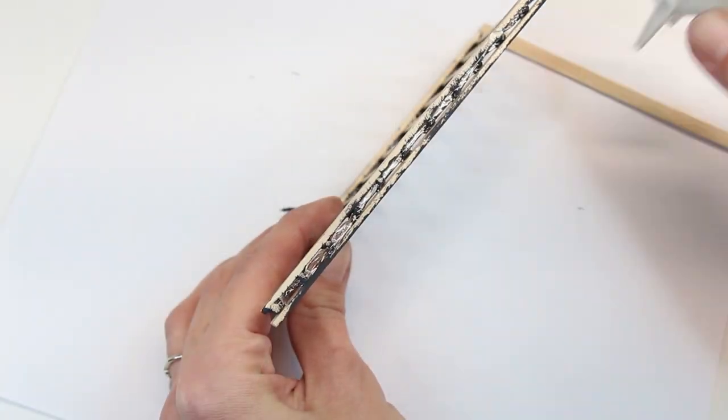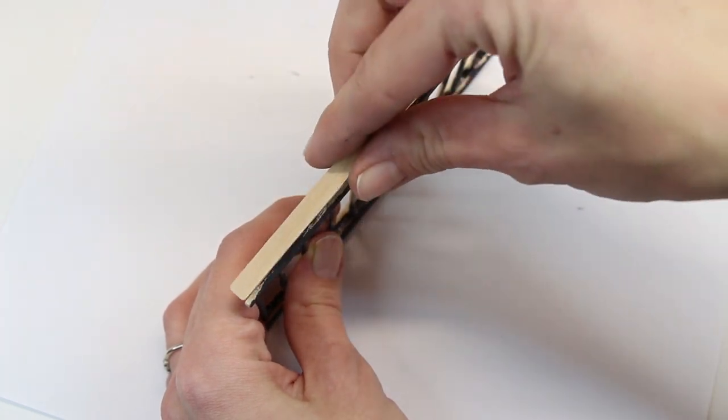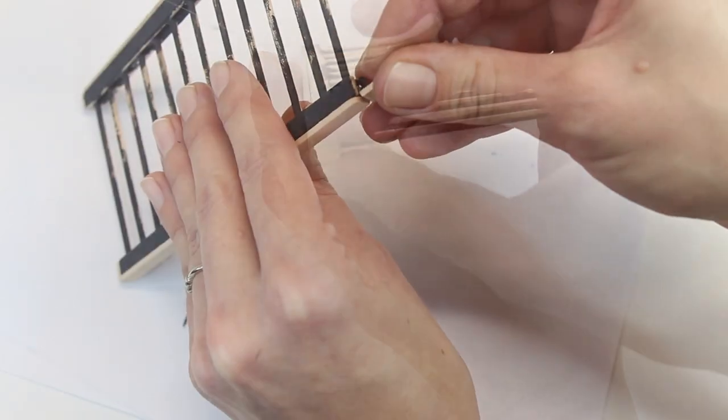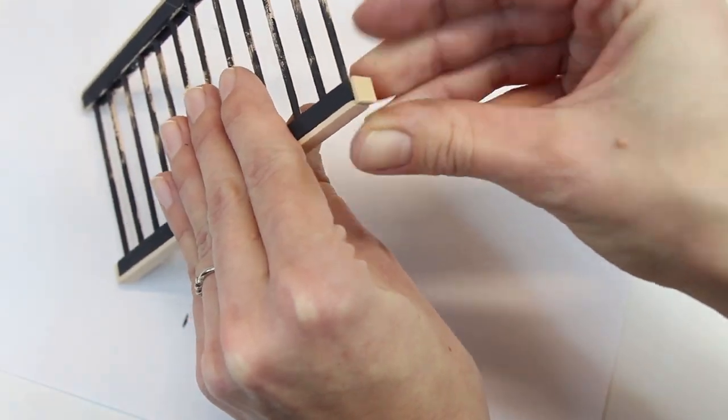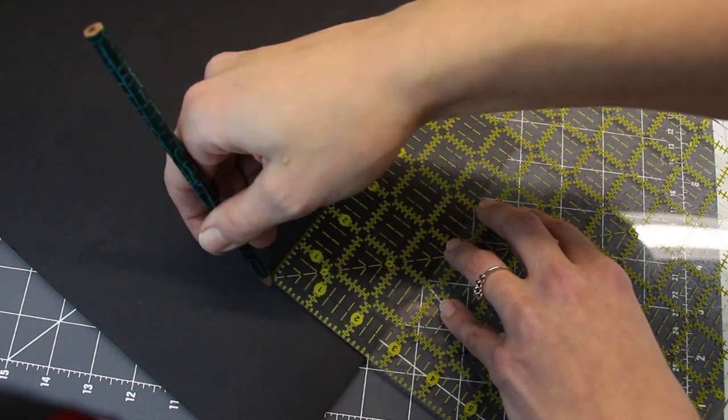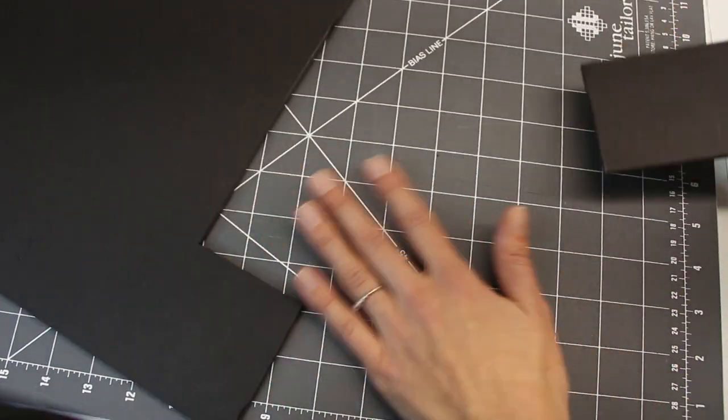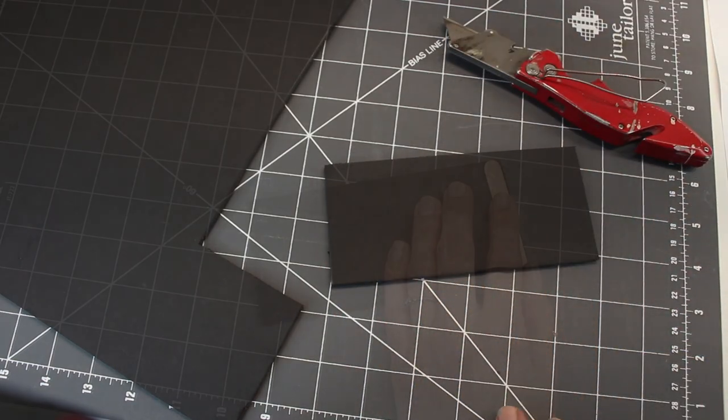Glue another skinny stick to the top and cut and glue small pieces for the sides. Do the same on the bottom. Then take some black foam board and cut a rectangle five and seven eighths by two and five eighths.